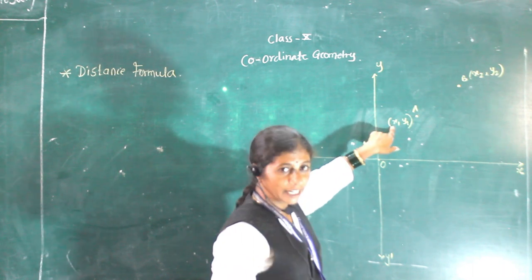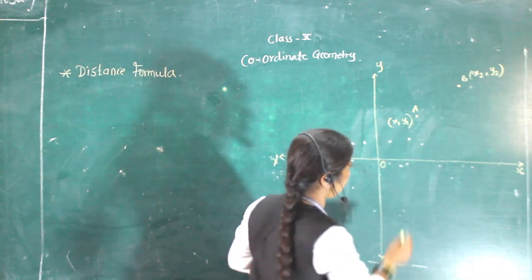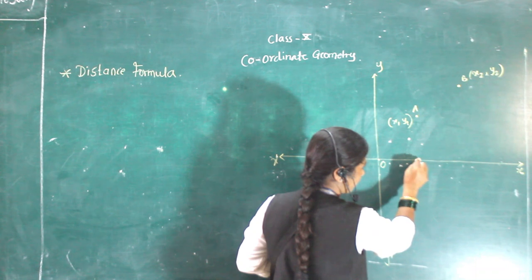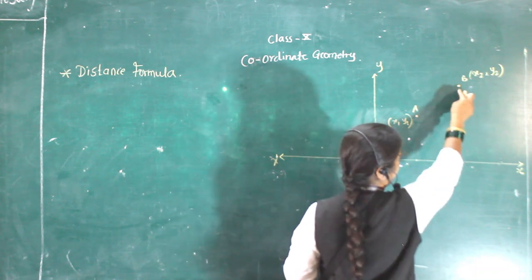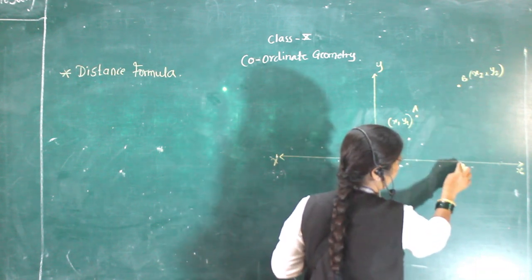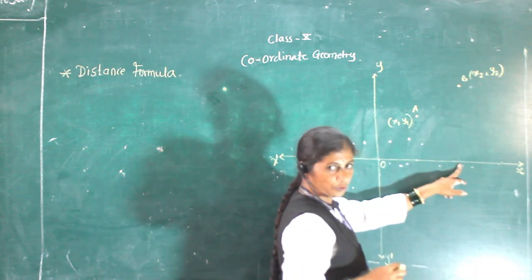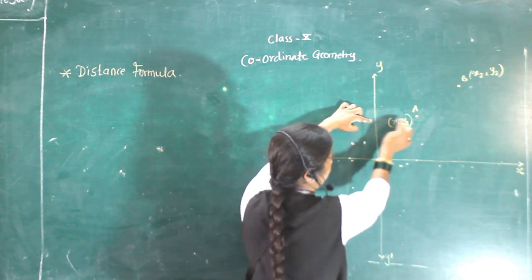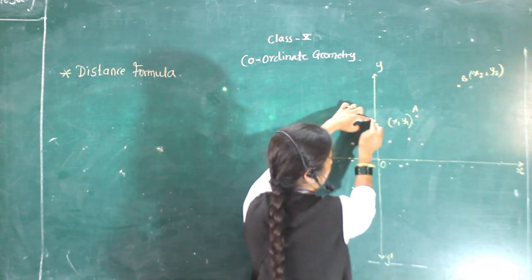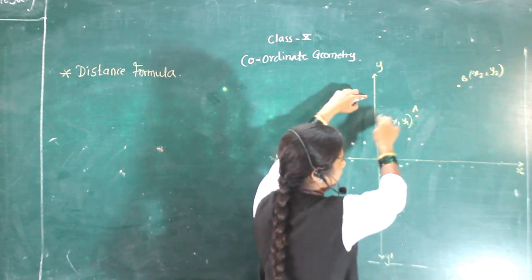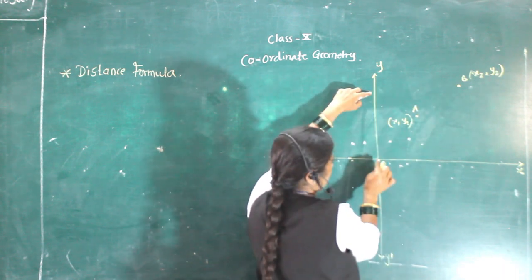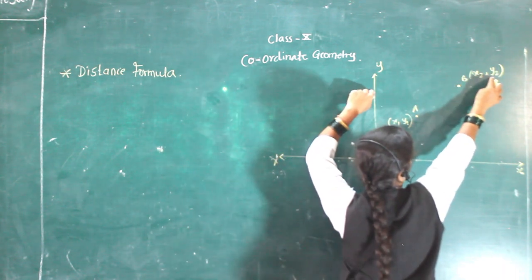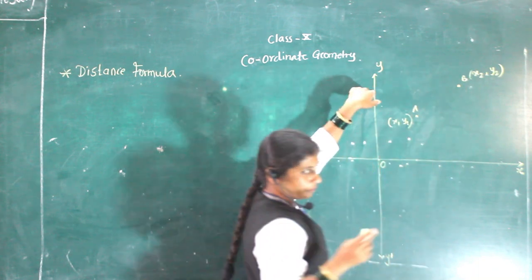Where will x1 be? x1 will be here on the x-axis, and x2 will be here. This distance from here for this point is y1, and from here to here this distance is y2.